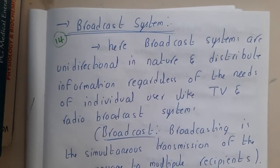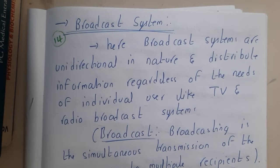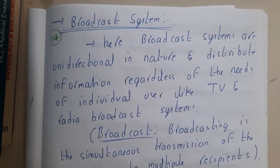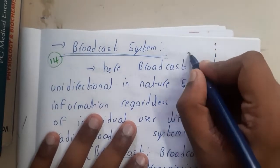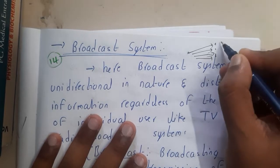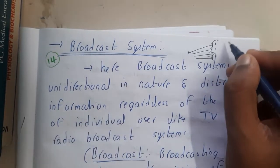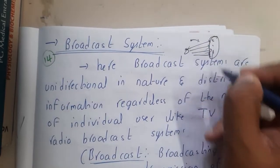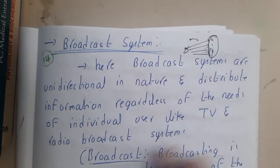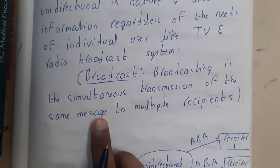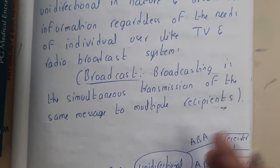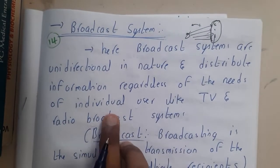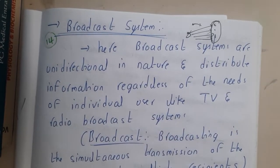In this lecture, let us go through broadcasting systems and discuss DAB in detail. Broadcasting means sending a message to a group of members. Instead of sending individually, you create a group and drop a file — everyone receives it. The concept of sending a single file to multiple users at a single time is broadcasting. Broadcasting is the simultaneous transmission of the same message to multiple recipients. Broadcasting systems are unidirectional in nature and distribute information regardless of individual user need, like TV and radio broadcast systems.